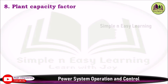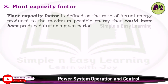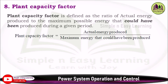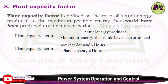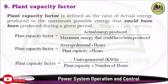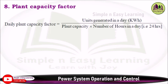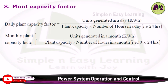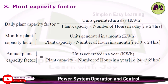Eighth: plant capacity factor. It is defined as the ratio of actual energy produced to the maximum possible energy that could have been produced during a given period. Plant Capacity Factor = Actual Energy Produced / Maximum Possible Energy = (Average Demand × Hours) / (Plant Capacity × Hours) = Units Generated / (Plant Capacity × Number of Hours). This applies for daily (24 hours), monthly, and annual plant capacity factor.